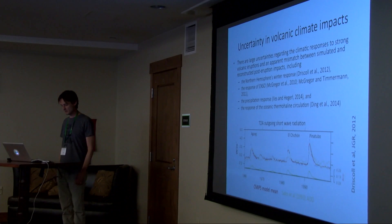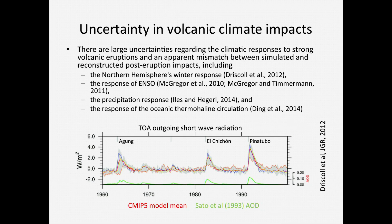These are the three main volcanoes over our hindcast period from 1960 forward: Agung in 1963, El Chichón in 1982, and Pinatubo in 1991. The green line shows the aerosol optical depth from Sato et al., confirming these are the three main eruptions. In red is the CMIP5 model mean when forced with that dataset or another dataset, and the grey shading shows quite a lot of differences in the top-of-atmosphere outgoing shortwave radiation.